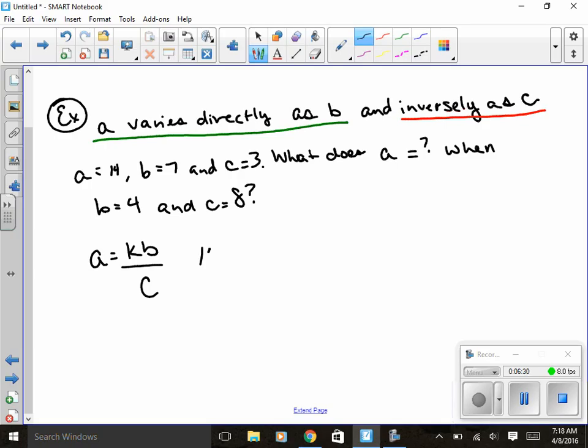So I've got 14 equals K times 7 over 3. In order to solve for K, I'm going to multiply by 3 to both sides so that they cancel. Well, 14 times 3 gives me 42 equals 7K, divided by 7, K equals 6.